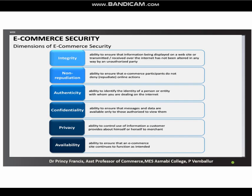To summarize the six dimensions of e-commerce security: first, integrity — the ability to ensure that information displayed on a website or transmitted over the internet has not been altered in any way by an unauthorized party. Second, non-repudiation — the ability to ensure that e-commerce participants don't deny or repudiate online transactions. Third, authenticity — the ability to identify the identity of the person or entity with whom you are dealing on the internet.